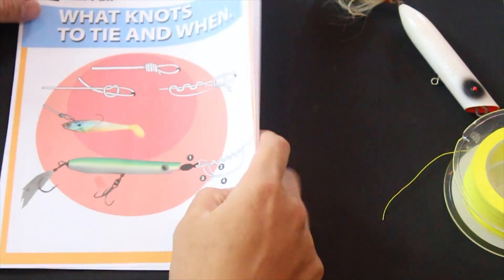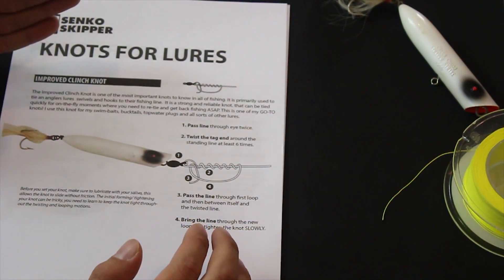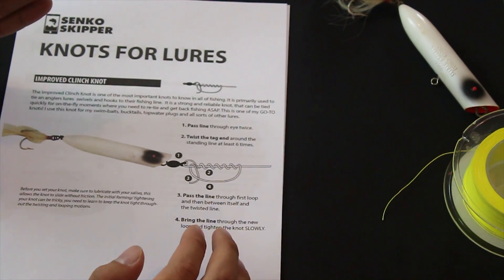So we just wrote a new PDF called 'What Knots to Tie and When.' One of our favorite knots in here is the improved clinch knot. I'm going to show you how to tie it really quickly.